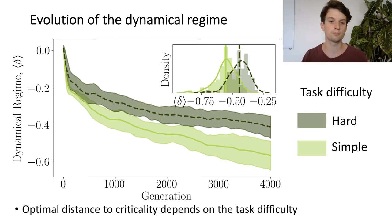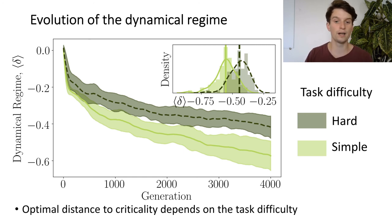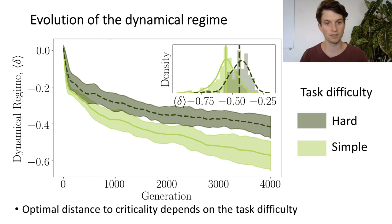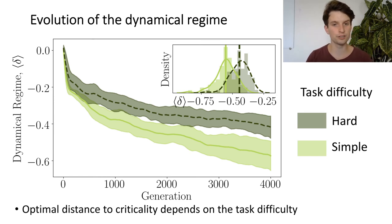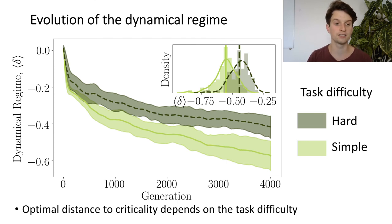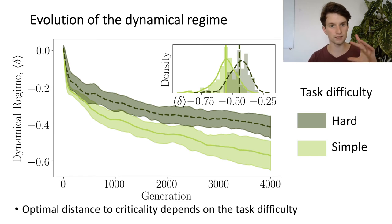Looking closely at the intermediately subcritical regime that supercritical and critical populations descend into, there seems to be a slight difference in the distance to the critical point between the simple task and the hard task. In an additional experiment evolving batches of initially critical populations under the hard task versus the simple task, we found a significant difference in delta values at the last generation, with the hard task batch being significantly closer to the critical point. So it seems beneficial to be closer to criticality when evolved under a harder task. Since in our model it is only possible to evolve toward becoming more subcritical, we propose that it is beneficial to initialize populations at the critical point so they can discover the optimal distance to criticality for a given task.